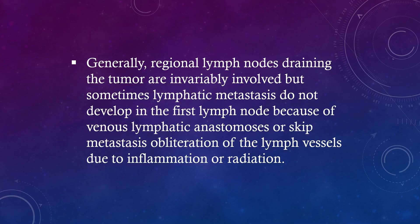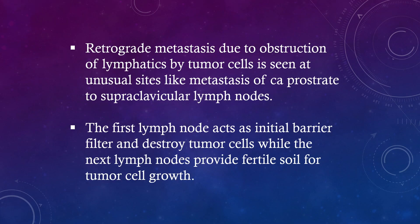Generally, regional lymph nodes draining the tumor are invariably involved, but sometimes lymphatic metastasis does not develop in the first lymph node because of venous-lymphatic anastomosis, skip metastasis, or obliteration of lymph vessels due to inflammation or radiation. Retrograde metastasis due to obstruction of lymphatics by tumor cells is seen at unusual sites, such as metastasis of carcinoma of the prostate to supraclavicular lymph nodes. The first lymph node acts as an initial barrier and filter to destroy tumor cells, while the next lymph nodes provide fertile soil for tumor cell growth.